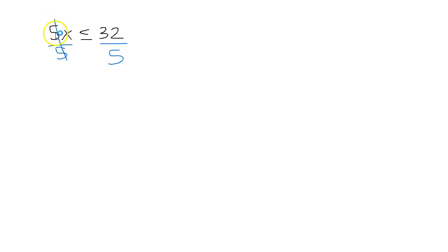This time they cancel because 5 divided by 5 is a 1. We don't have to write a 1 in front of an x. So we get x less than or equal to. This time we're going to get a decimal. 32 divided by 5 is 6.4.